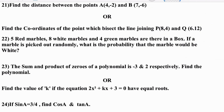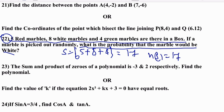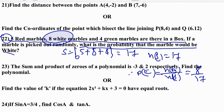Probability question: there are 5 red, 8 white, and 4 green marbles in a box. What is the probability of picking a white marble? Total n(S) = 5 + 8 + 4 = 17. White marbles = 8. P(E) = 8/17 is the right answer.